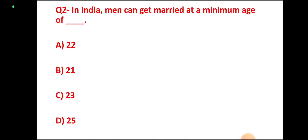Question 2: In India, men can get married at a minimum age of — 22, 21, 23, or 25? Correct answer: 21.